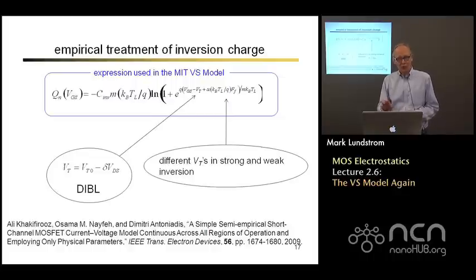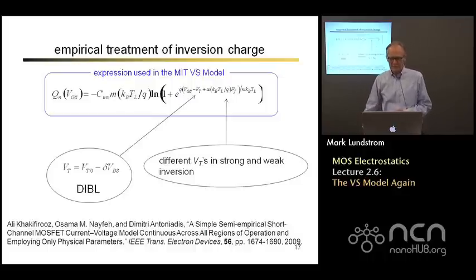And this leads to the fact that we really need two different threshold voltages, one to describe the sub-threshold characteristic, and a different one to describe the above-threshold characteristic. They're just a little bit different. I'll refer you to this paper for more of a discussion about that. But it just adds one additional refinement to this empirical model.